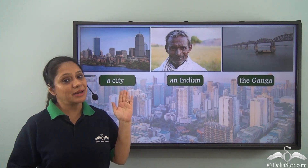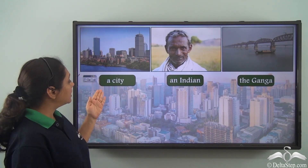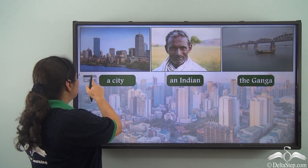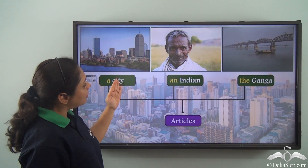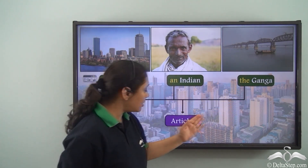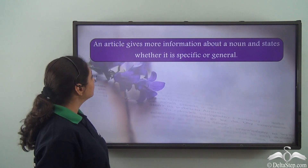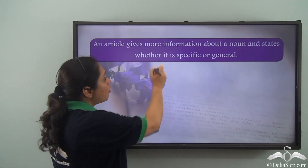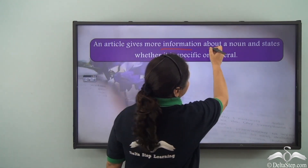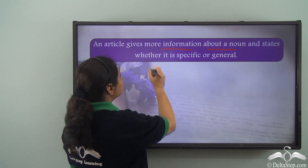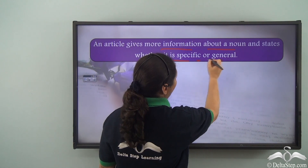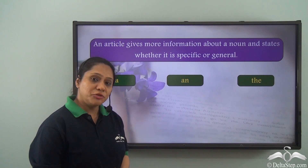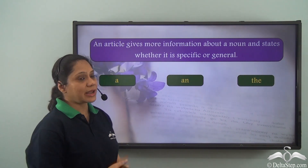Let us begin by reading what is on the screen: a city, an Indian, the Ganga. Here, a, an, and the are all articles. So what is an article? An article gives more information about a noun and states whether it is specific or general. A, an, and the are the three articles in the English language.